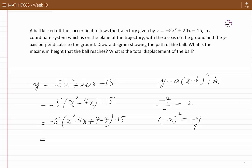You would get x squared minus 4x plus 4 minus 4 and then minus 15. This is equal to minus 5 times the first three terms will give you a complete square, which is (x minus 2) squared. This minus 2 is the same as this minus 2 that you obtained before. You have a minus 4 and a minus 15.